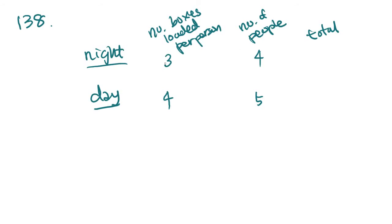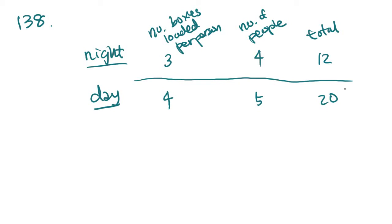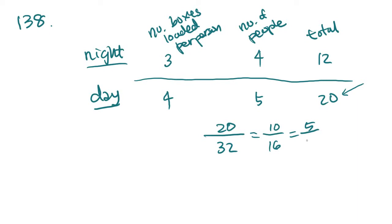If there are 4 people on the night crew and each loaded 3 boxes, you multiply to get 12 total boxes for the night crew. The day crew gets 5 times 4, which is 20 boxes. The question asks what fraction of all boxes the day crew loaded: 20 over 20 plus 12, which is 20/32. Simplify to get 10/16, and that's 5/8. That is answer choice E.